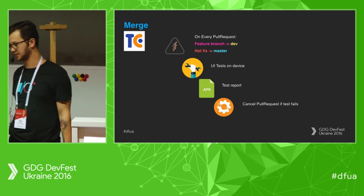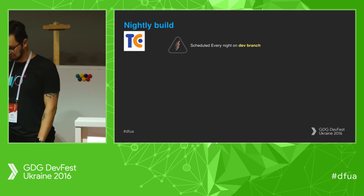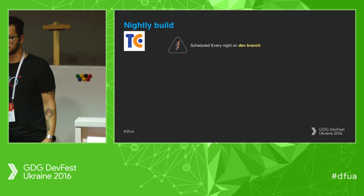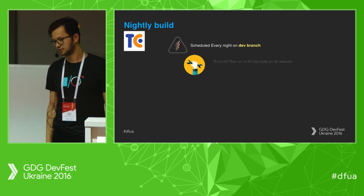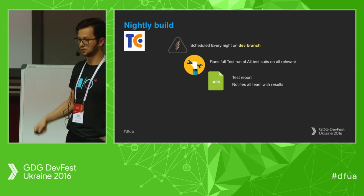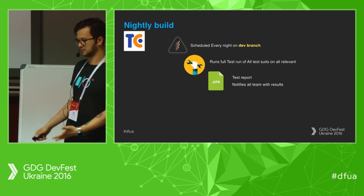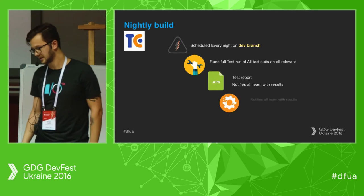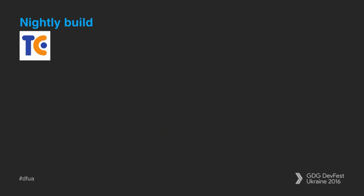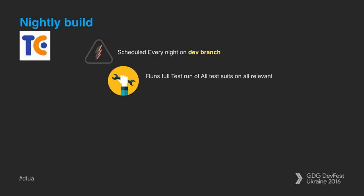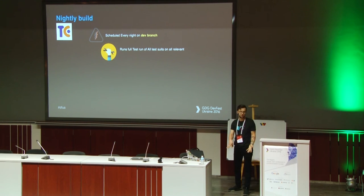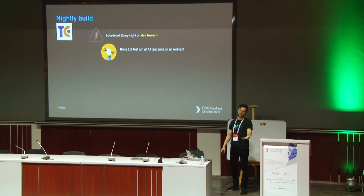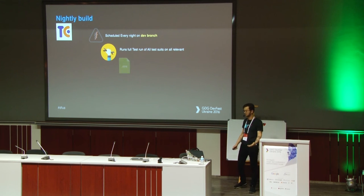Third: nightly build. It's scheduled on your dev branch and runs every night with all your tests. After that it sends you a test report via email and notifies about results. What's also good: if you're using GitLab or similar, you can create issues in your tracker whenever a nightly build fails, and assign someone on the team to be responsible — they come in to work and the first thing they check is whether there are failures.